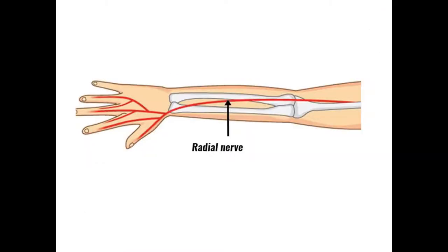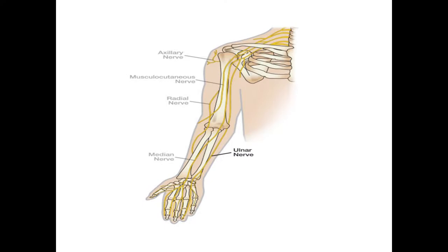What is the radial nerve? What is the function of the radial nerve? And what is the indication of the radial nerve? Radial nerve is a major peripheral nerve of the upper limb. Radial nerve helps you move your elbow, wrist, hand and fingers.